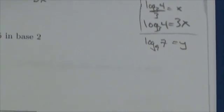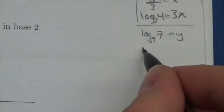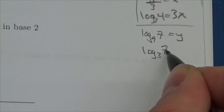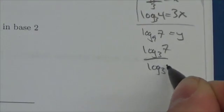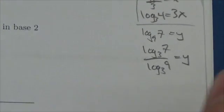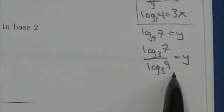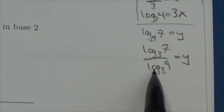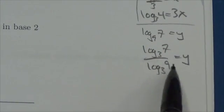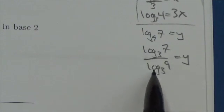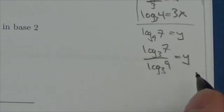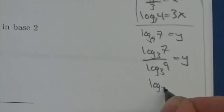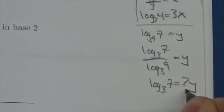I've got to convert that to base 3 as well. So the log base 3 of 7 over the log base 3 of 9 equals y. Log base 3 of 9 is going to be 2. And since I'm dividing by 2 here, I will multiply by 2 to simplify that, and I'll get the log base 3 of 7 equals 2y.